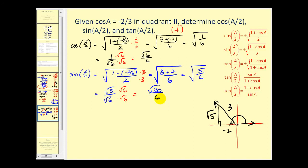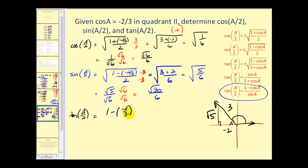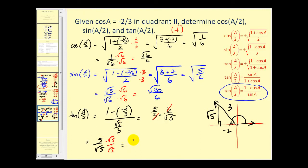We want to find the tangent of a over two. We have a variety of options; I'll use the identity: one minus cosine a, which is negative two-thirds, all over the sine of angle a. Going back to our reference triangle, sine of angle a is opposite over hypotenuse, or square root of five over three. One minus negative two-thirds works out to five-thirds. Instead of dividing by square root five over three, we multiply by the reciprocal. This simplifies to five over the square root of five. Rationalizing once more, we have five times square root five over five, which simplifies to square root of five for the tangent of a over two.